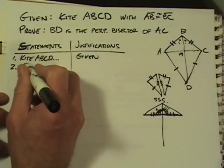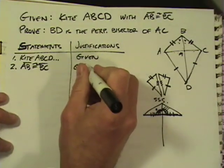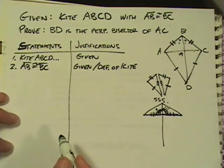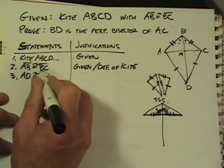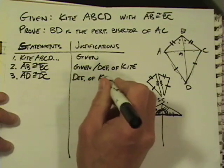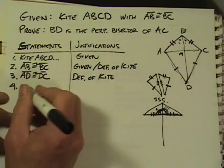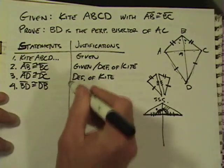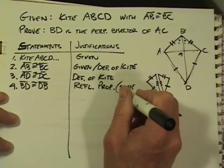So I start with the givens and then to show that this triangle here is the same as this triangle on the other half, I need to get one of my four triangle congruence conjectures demonstrated. I know this is already congruent to this and this is congruent to this, so these are the same side and it's going to be congruent to itself — and that's side-side-side. Step two: AB is congruent to BC — that's actually in the given, but you can also say it's part of the definition of a kite. Step three: AD is congruent to DC — that's also definition of kite. Step four: BD is congruent to DB, and that's called the reflexive property — you could also just say it's the same segment.